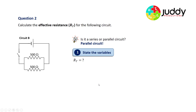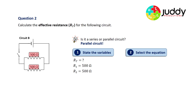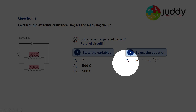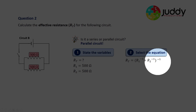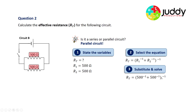Let's state our variables. We want to know the total or effective resistance. The resistance of the first branch, R1, is 500 ohms, and the second resistor R2 is 500 ohms as well. For a parallel circuit, the total resistance equals the reciprocal of R1 plus the reciprocal of R2, all raised to the power of negative one. Substituting: the effective resistance equals (1/500 + 1/500)⁻¹, which gives 250 ohms. The effective resistance for circuit B is 250 ohms.